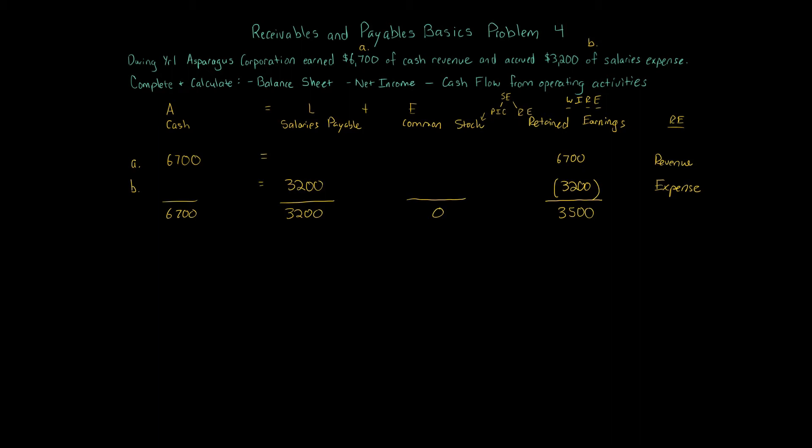With the accounting equation, the balance sheet here is going to be very simple. All we need to do is just take these balances and transform them into a balance sheet. So on the left side of the balance sheet, we've got assets. We only have one asset here, right? Cash. And the amount is $6,700. On the right side of the balance sheet, we have liabilities. And the only liability we have here from these transactions is salaries payable. The balance in salaries payable, of course, is $3,200.